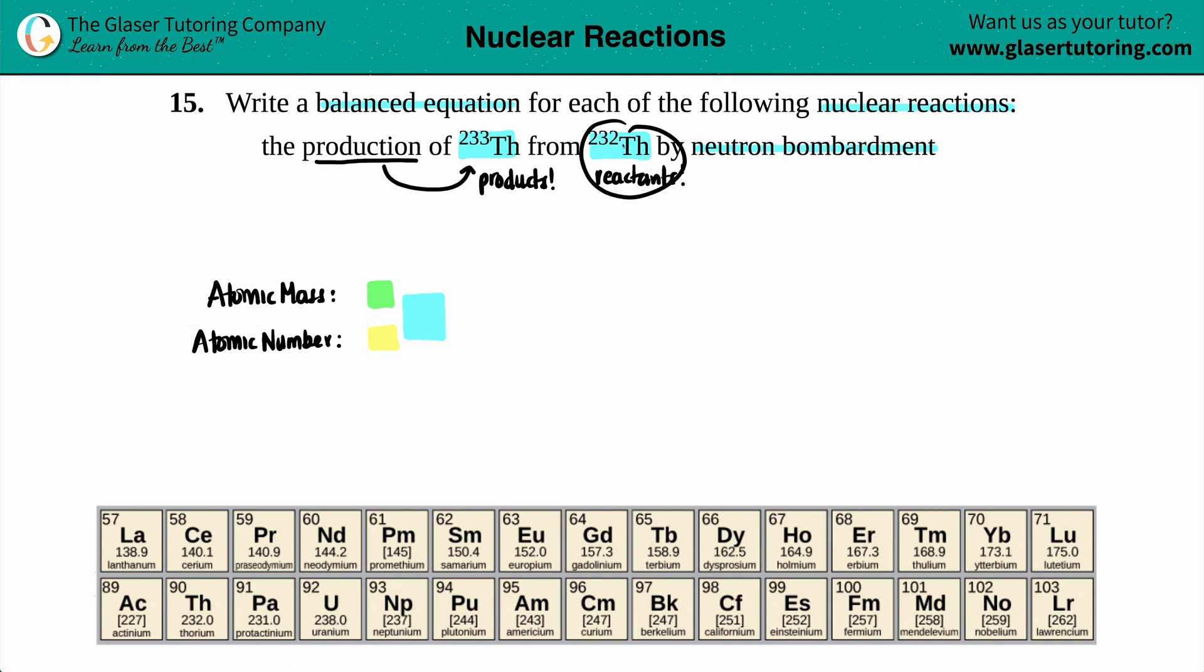We have a known reactant and a known product. Let's write these out before we even get into this neutron bombardment stuff. Let's do the reactant first. They told us it was Th, which is thorium, so we're going to write Th. The number on the top is the atomic mass, and they're saying we're starting off with 232.